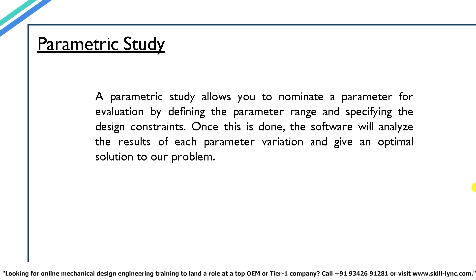The first question we will be answering is: what is a parametric study? A parametric study allows you to nominate a parameter for evaluation by defining the parameter range and specifying the design constraints. Once this is done, the software will analyze the results of each parameter variation and give an optimal solution to our problem. The definition sounds a bit too complicated, so don't worry — we'll explain it with the help of an example.